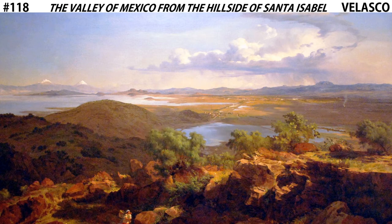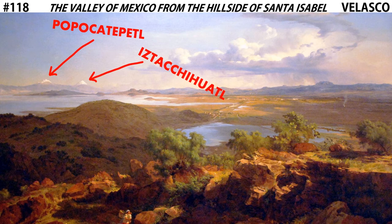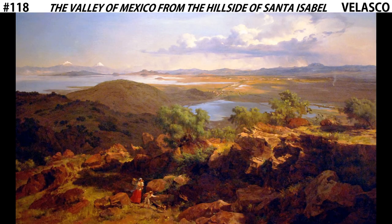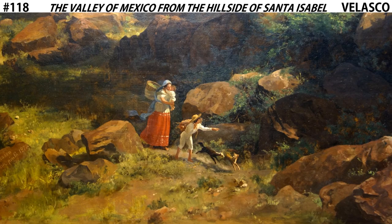We also see a number of other things. These two peaks back here are famous landmarks in the Mexican landscape. I wouldn't worry about those names, but I would know that they represent recognizable parts of the Mexican geography. Here in the foreground, we see an indigenous family — a mother, her two children, and their dogs — representing the people of Mexico City in the early 19th century.